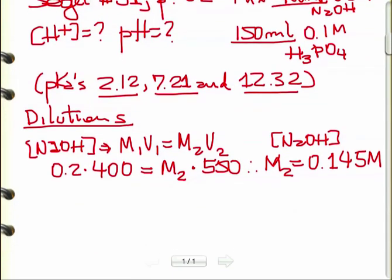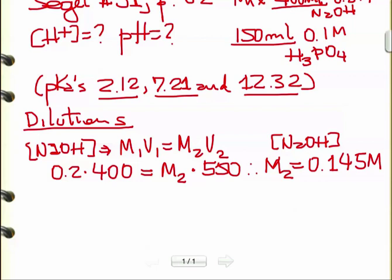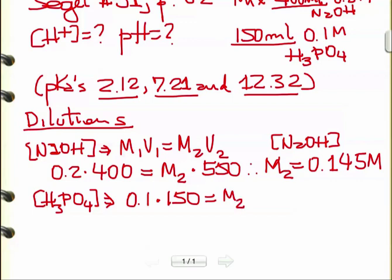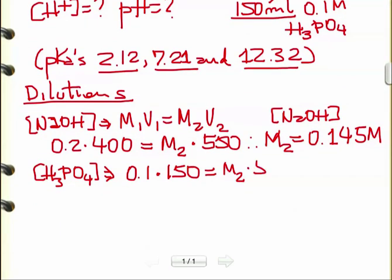Let's do the same thing with phosphoric acid. We start with 150 milliliters of 0.1 molar, and it's going to be diluted. Same principle: M1V1 equals M2V2. So 0.1 times 150 equals M2 times 550. Calculating M2 gives us 0.027 molar.